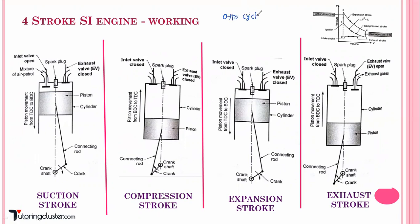There is a German engineer, Otto, who discovered this concept. The cycle on which the SI engine works — you have to remember — it is called the Otto cycle. Now, in the case of a four-stroke engine, the complete cycle — this Otto cycle — is completed in four strokes of the piston, or you can say two revolutions of the crankshaft. That's why these are called four-stroke engines.